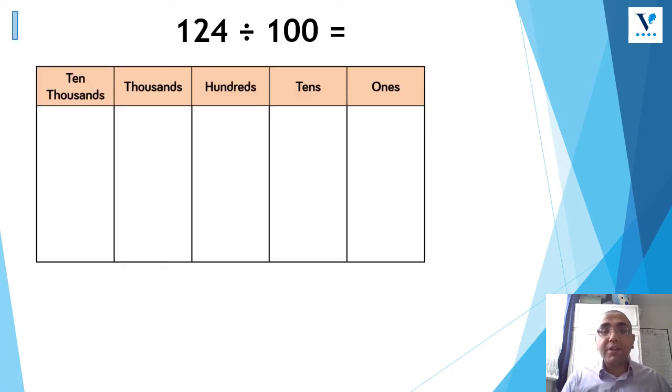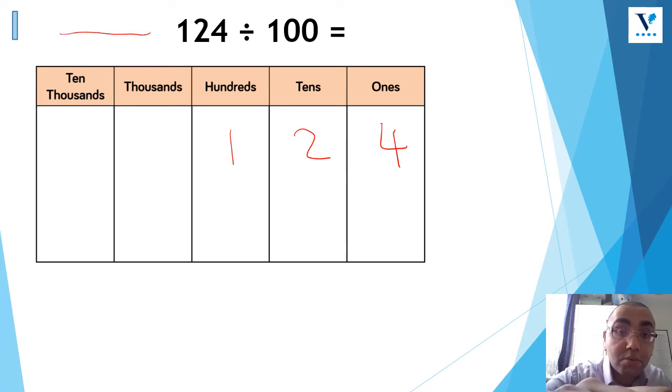When you become really confident at doing this on a piece of paper, you won't have to write down, and you won't have to use a place value grid, and you can just visualize one in your head, and you can visualize moving the numbers, all the circles, all the digits across. So let's have a look at this one. This time, I'm now going to be dividing. So once again, this time, instead of drawing circles, I'm going to just write down the number. So I've got 124, and this time, I'm now going to be dividing.